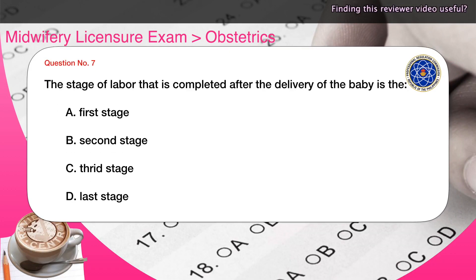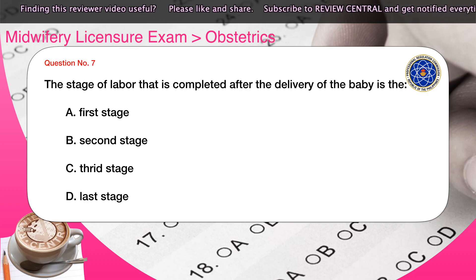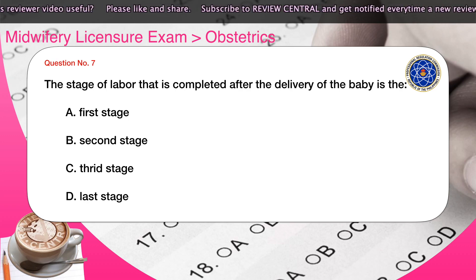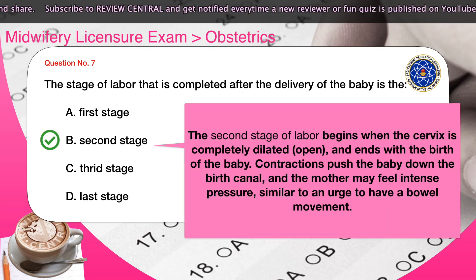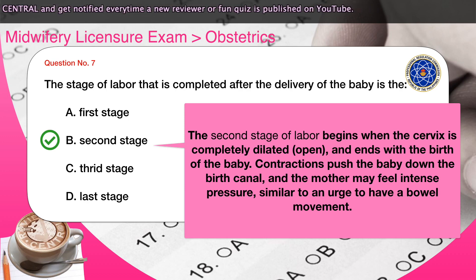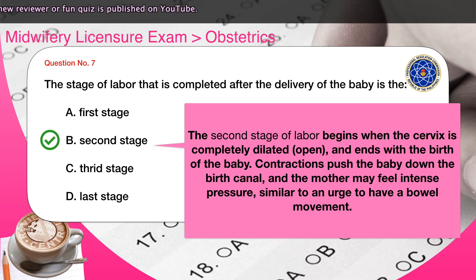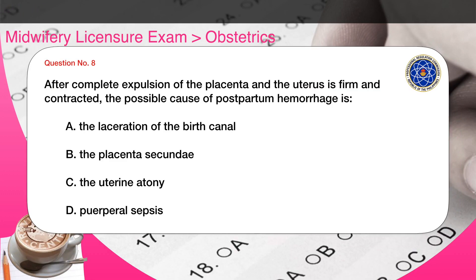Question number seven: The stage of labor that is completed after the delivery of the baby is the — A) first stage, B) second stage, C) third stage, D) last stage. The correct answer is B. The second stage of labor begins when the cervix is completely dilated and ends with the birth of the baby. Contractions push the baby down the birth canal and the mother may feel intense pressure similar to an urge to have a bowel movement.